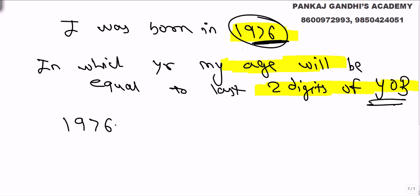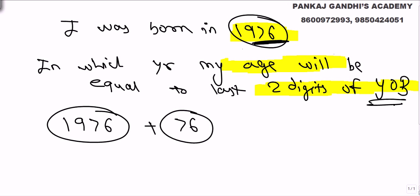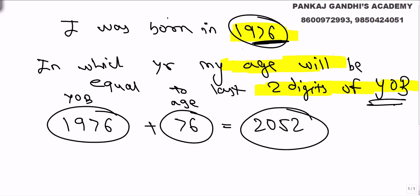I was born in 1976, and my age should be 76. Year of birth plus age: 1976 + 76 = 2052. So the answer will be 2052. In which year will my age be equal to the last two digits of my year of birth?